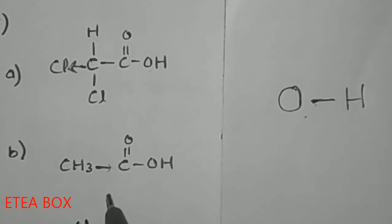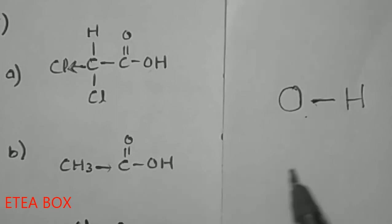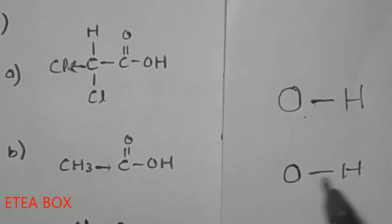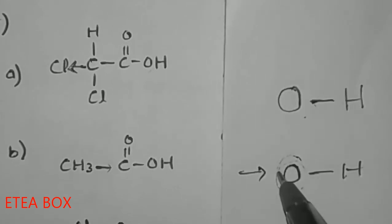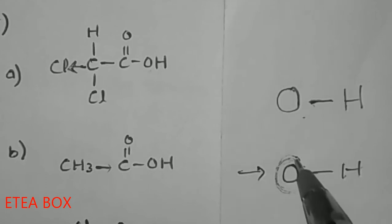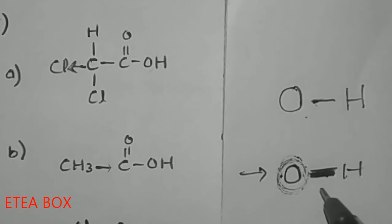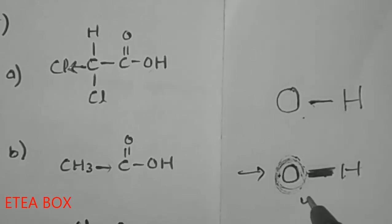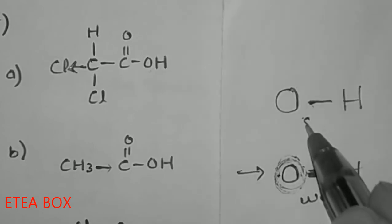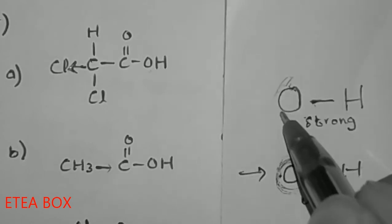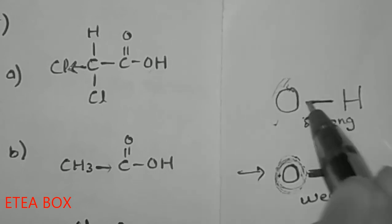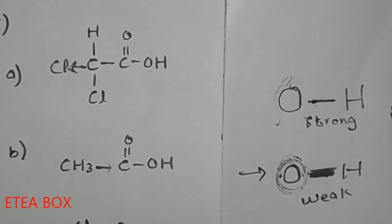When an electron-donating group donates electrons to the carbon, due to the inductive effect the electron density around the oxygen increases. The oxygen becomes more negative, strengthening the O–H bond. When this bond becomes stronger, the hydrogen cannot easily detach from the oxygen. So this compound is a weak acid. The acid with an electron-donating group is the weak acid, while the one with an electron-withdrawing group is stronger.